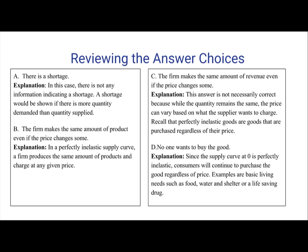Recall that perfectly inelastic goods are goods that are purchased regardless of their price. Answer D: no one wants to buy the good. Since the supply curve at zero is perfectly inelastic, consumers will continue to purchase the good regardless of the price. Examples are basic living needs such as food, water, and shelter, or a life-saving drug.